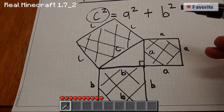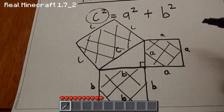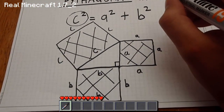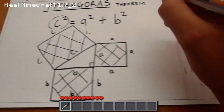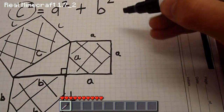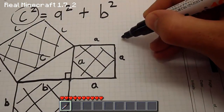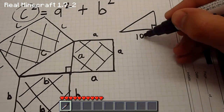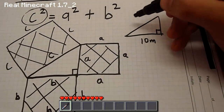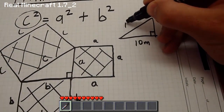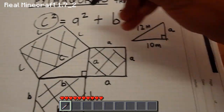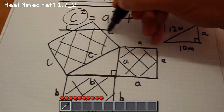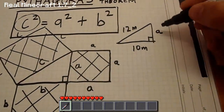So basically that's how we proved that c squared equals a squared plus b squared — pretty simple stuff. This can also be used to find unknown sides. For example, if b equals 10 metres and the hypotenuse equals 12 metres, you can actually use this equation to work out the length of a.